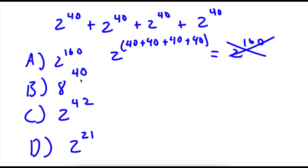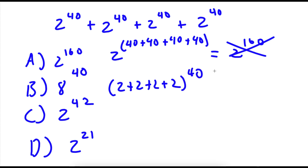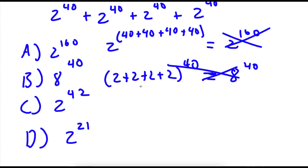Answer choice B is 8 to the power of 40. How people get this is they keep the exponents the same and simply add the bases: 2 plus 2 plus 2 plus 2 equals 8, giving 8 to the power of 40. However, this is also wrong — you can't add bases like that either.